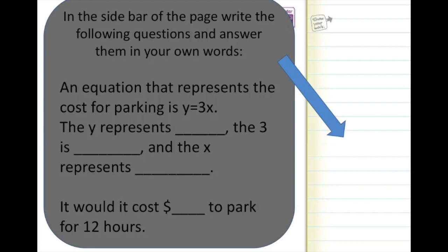Also write this below: an equation that represents the cost for parking is y = 3x. The y represents the total cost; the 3 is the cost per hour; and the x represents the number of hours. Look at your table to confirm. Using that equation, determine how much it would cost to park after 12 hours.